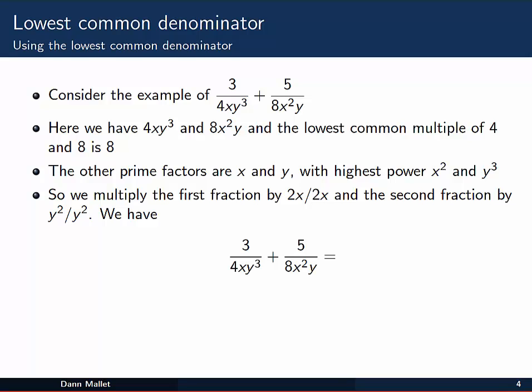So let's consider an example, 3 on 4xy cubed plus 5 on 8x squared y. Here we've got 4xy cubed and 8x squared y as the denominators of our two fractions. Now the lowest common multiple of 4 and 8 is 8, and the other factors that we have here are x and y, and their highest powers are x squared and y cubed.